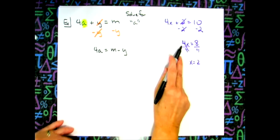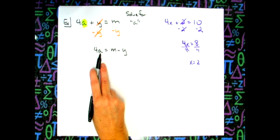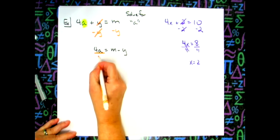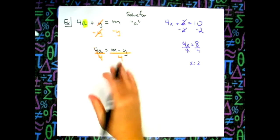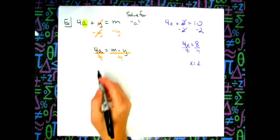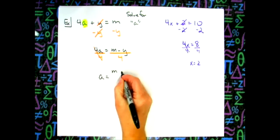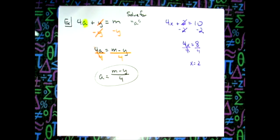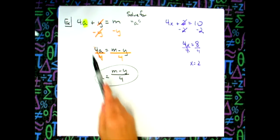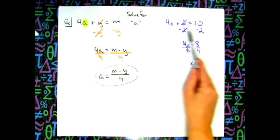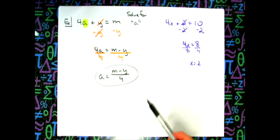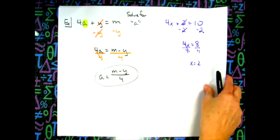Then, just like we divided both sides by 4 with numbers, divide both sides by 4 here — the 4s cancel, and we get a equals m minus y, all over 4. You won't get a equals 2; you'll get answers with letters. If things get confusing, replace letters with numbers and see if you recognize the steps. That's the technique of using simpler numbers.